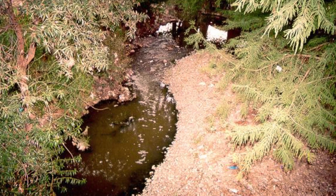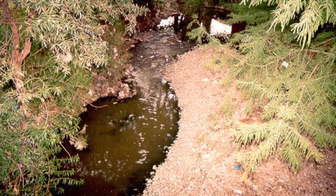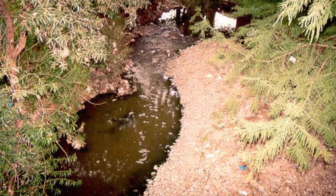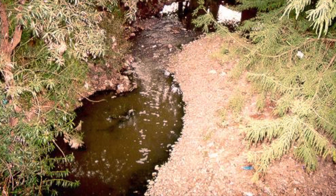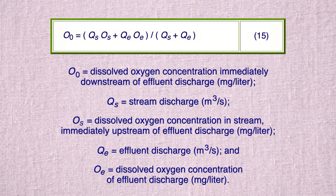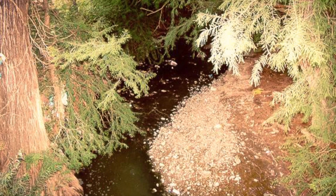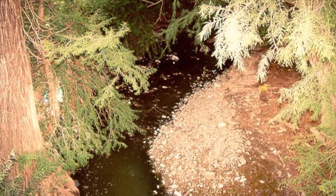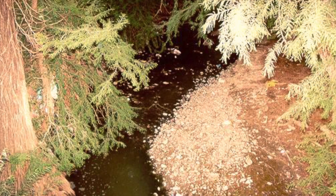For j equals 0, O sub j equals O sub 0. At the upstream boundary, a mass balance leads to the boundary condition. Assuming that the effluent is anoxic, O sub e is approximately equal to 0.